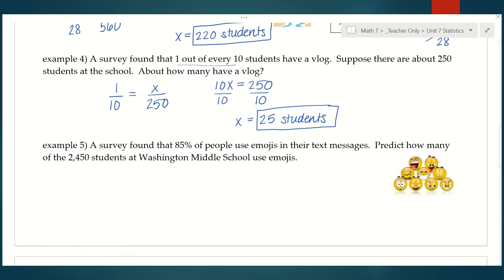Number five. A survey found that 85% of people use emojis in their text messages. Predict how many of the 2,450 students at Washington Middle School use emojis. This one's a little tricky because it doesn't tell us the actual number of people in the survey. It tells us the percent. So when you're thinking part over whole, you have to know that that 85% is out of 100. So our part was 85% out of 100% said that they used emojis.